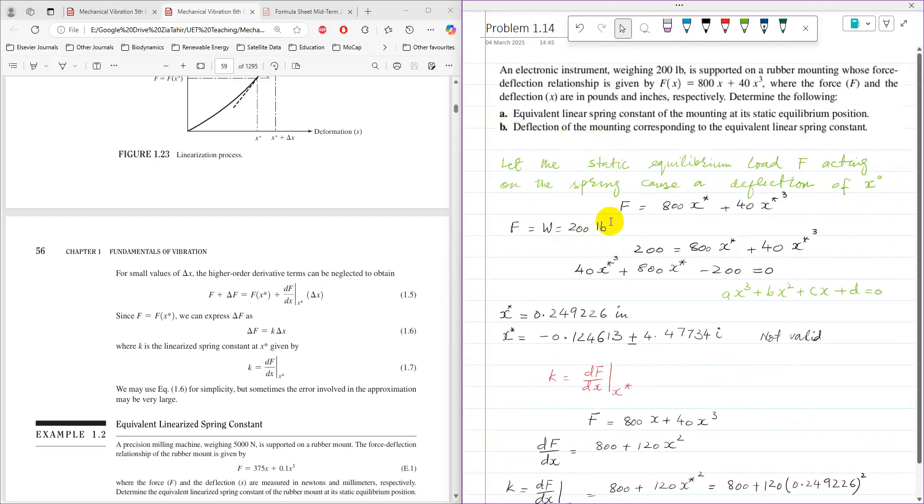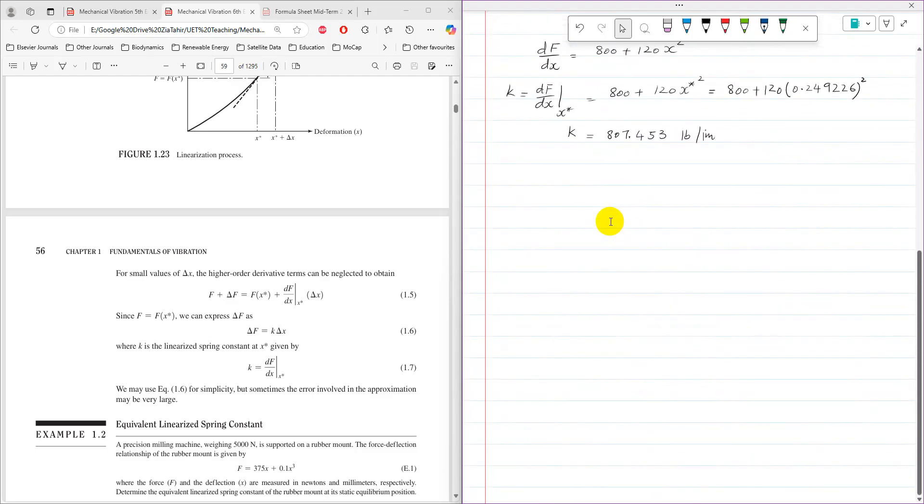Then the part b of it: deflection of the mounting corresponding to equivalent linearized spring. For that part b, it is very simple. F = k·x, so x will be equal to force divided by stiffness. The force is 200 pounds divided by 807.453, so that comes as 0.247692.